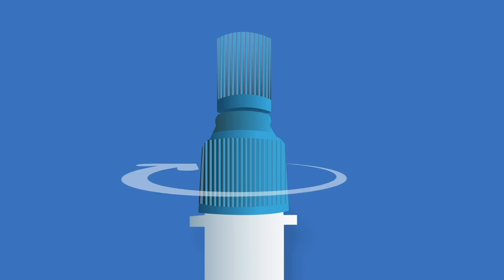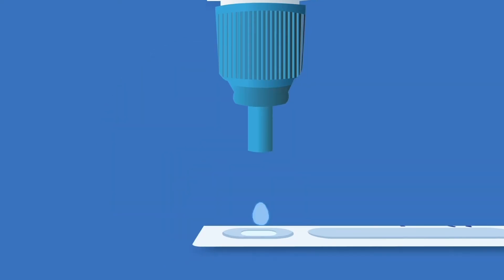Screw the blue cap back onto the vial, then unscrew the transparent cap and pour three drops into the sample well of the test cassette.